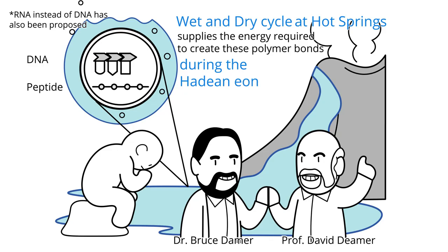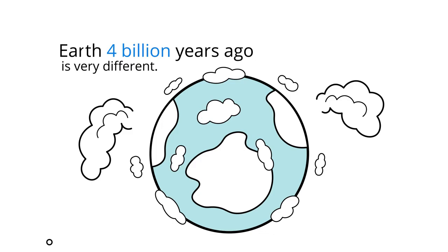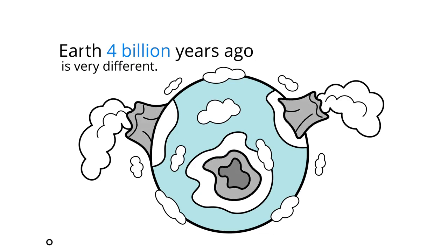Keep in mind that Earth, four billion years ago, is very much unlike Earth today. The continents had not yet formed, and any dry land that existed probably came in the form of volcanic islands, like Hawaii is today.